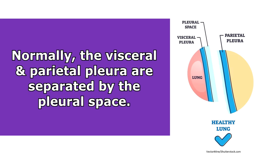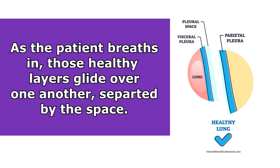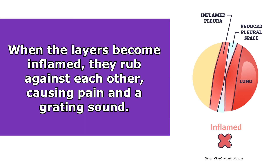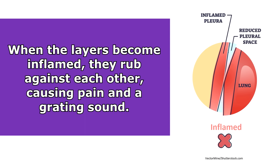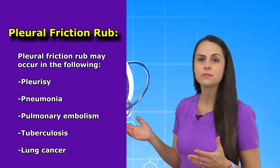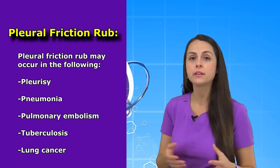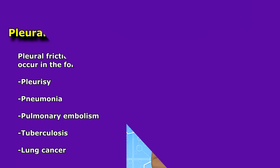What causes this sound? It occurs whenever those pleura layers become inflamed and rub up against each other, because normally the visceral and parietal pleura are separated by a small space, allowing the layers to glide over one another as the patient breathes. But when those layers become inflamed, that space shrinks, allowing them to rub against each other, creating pain and that harsh grating noise. It can happen in cases of pleurisy — inflammation of those pleura layers — pneumonia, pulmonary embolism, tuberculosis, and some forms of lung cancer.